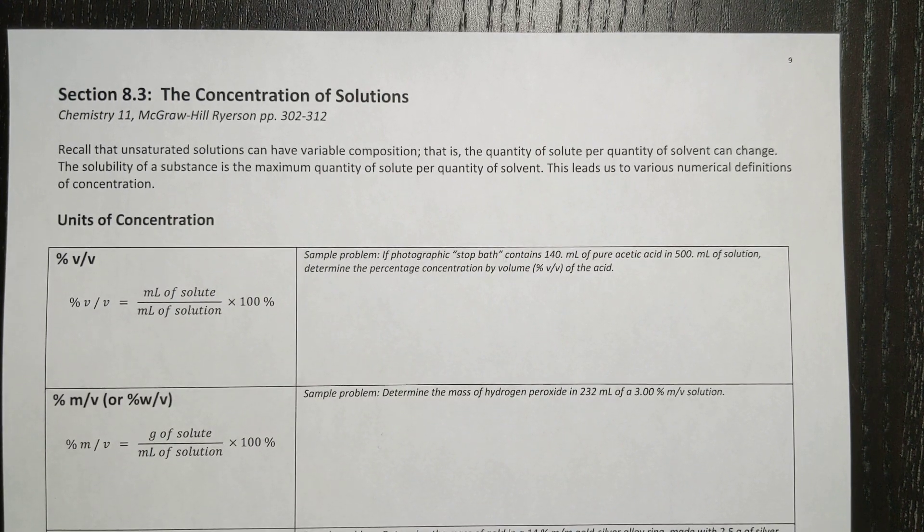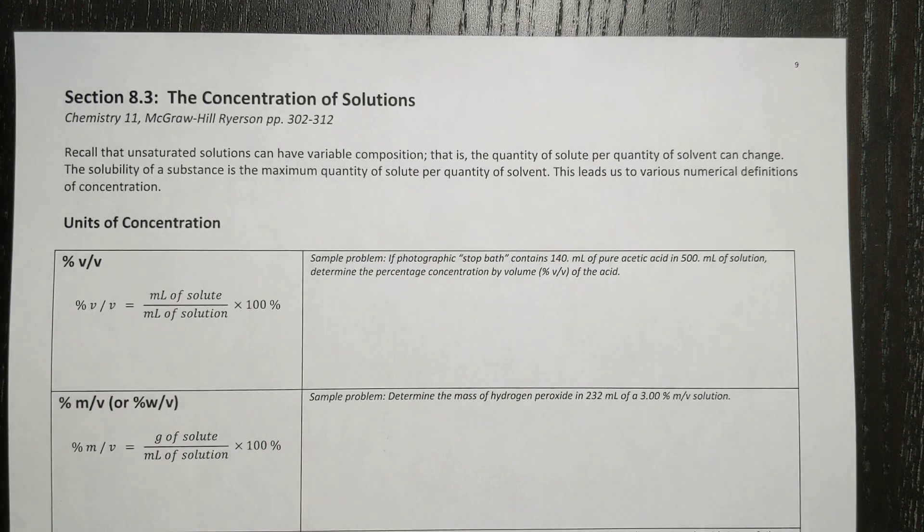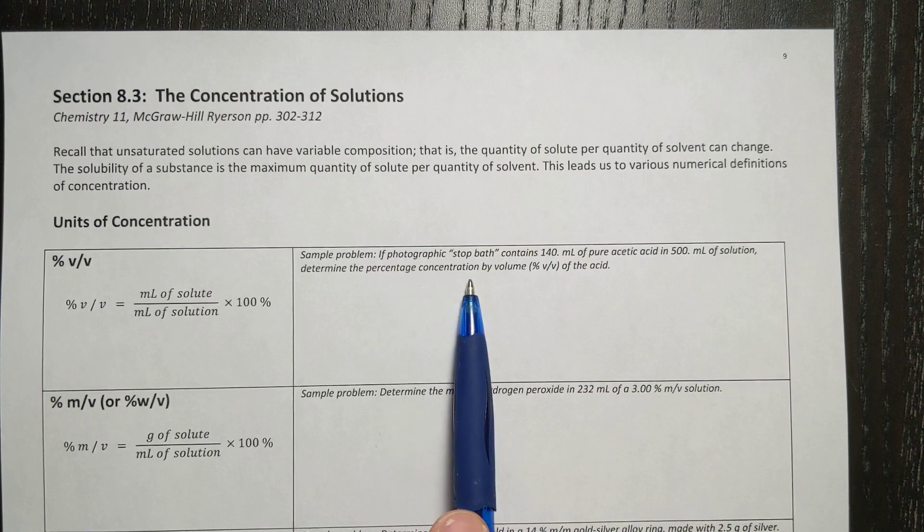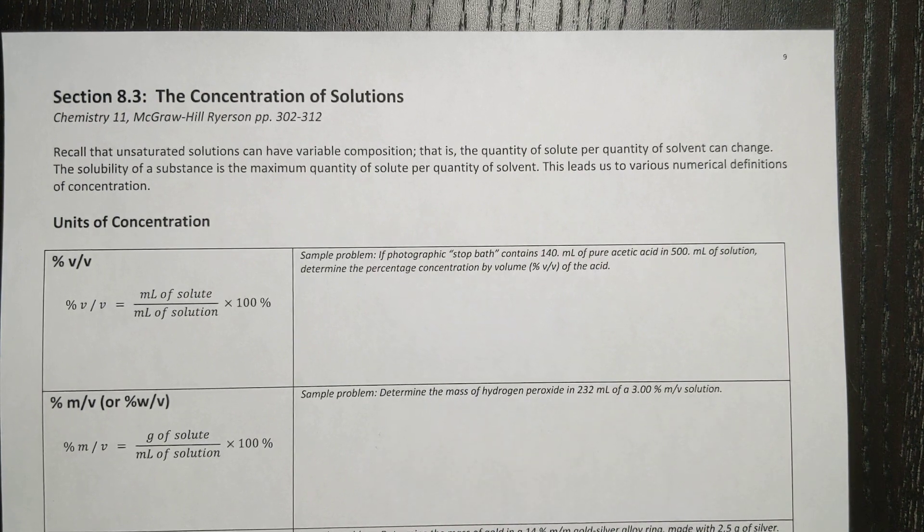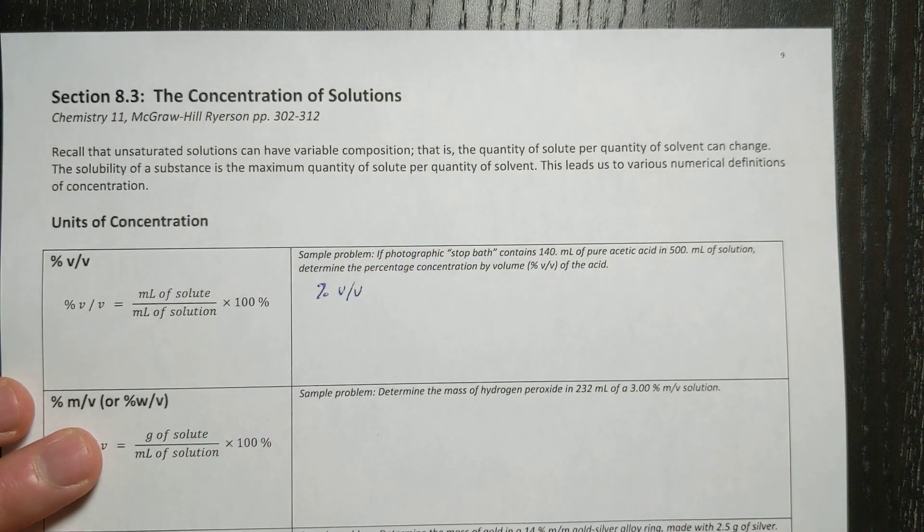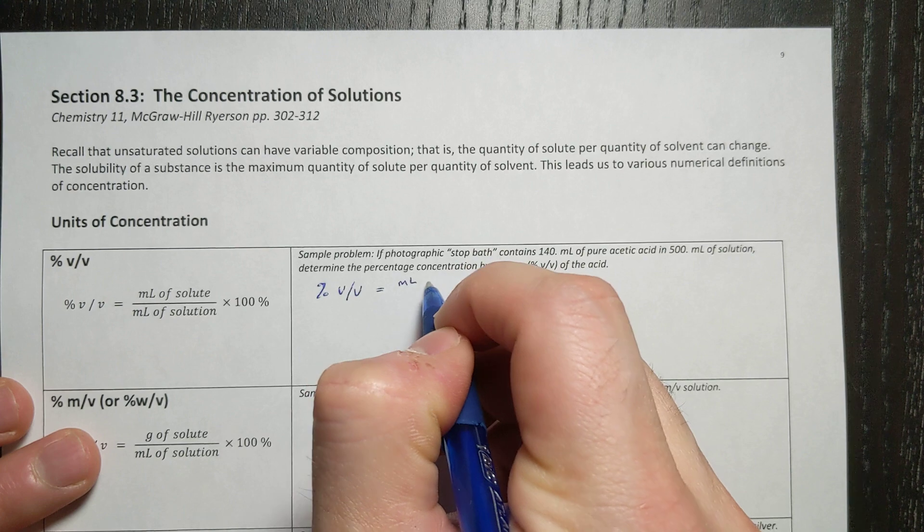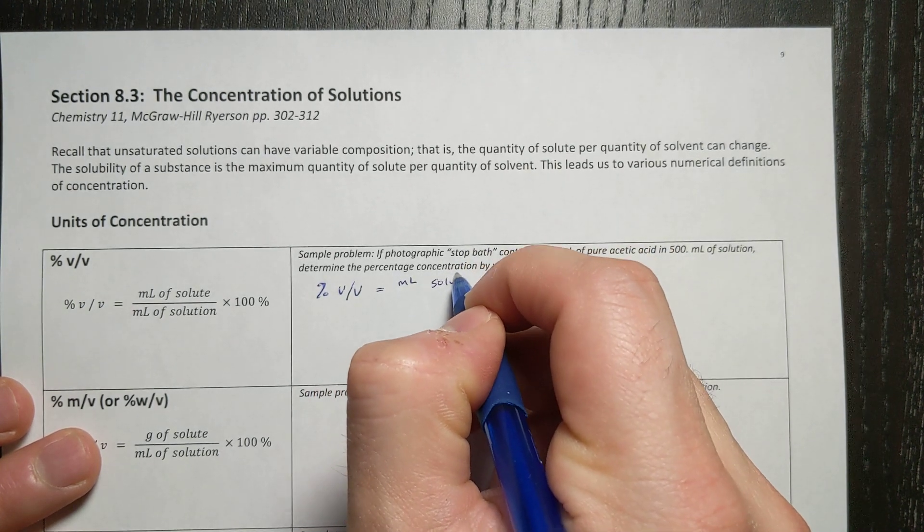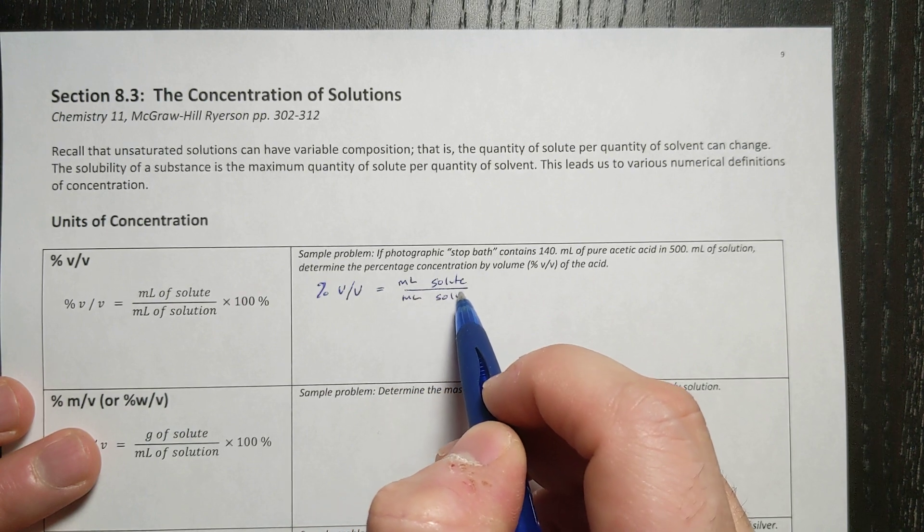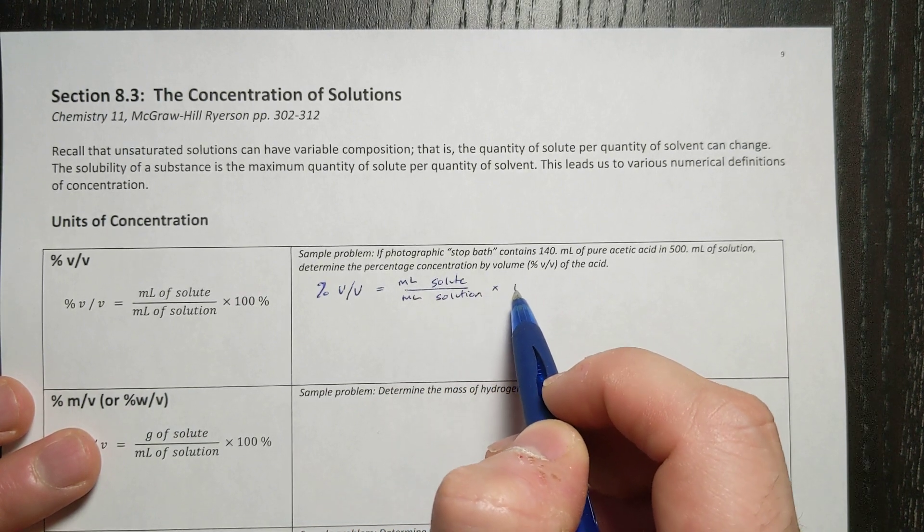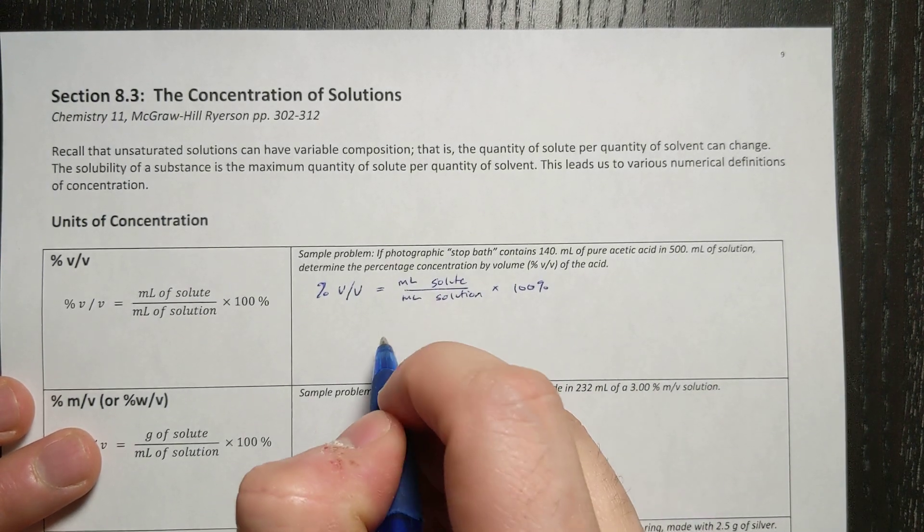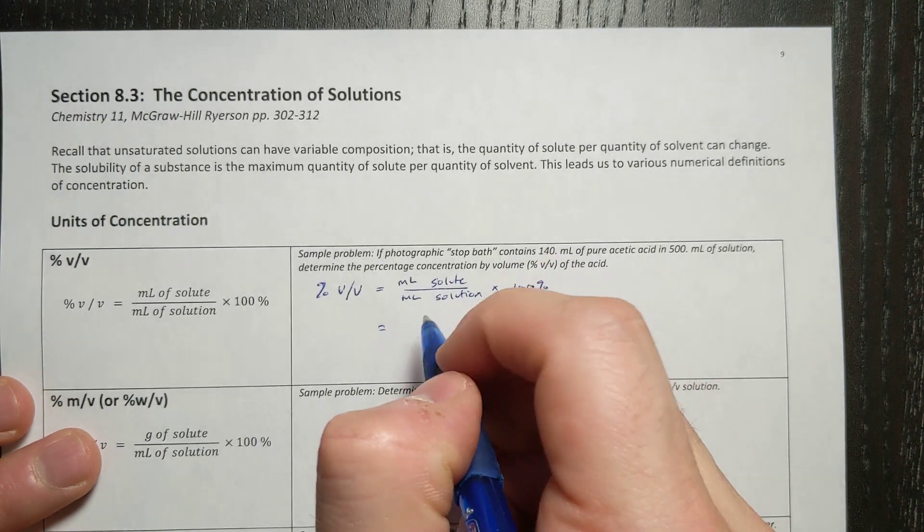A photographic stop bath contains 140 milliliters of pure acetic acid in 500 milliliters of solution. Determine the concentration, the percentage concentration by volume. So what we'll do here is we'll say percent V per V is equal to milliliters of solute all over milliliters of solution times 100%. So in this case, my solute is the acetic acid, so 140 milliliters of acetic acid.